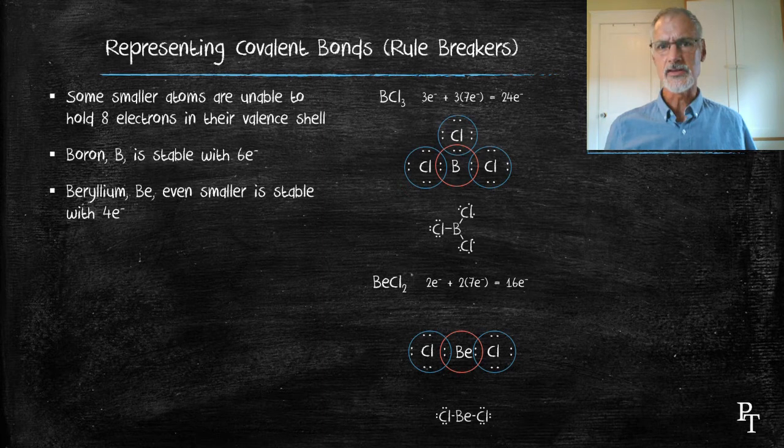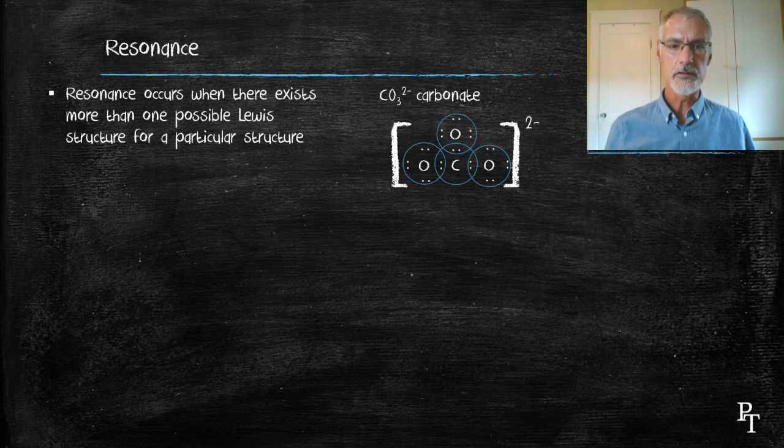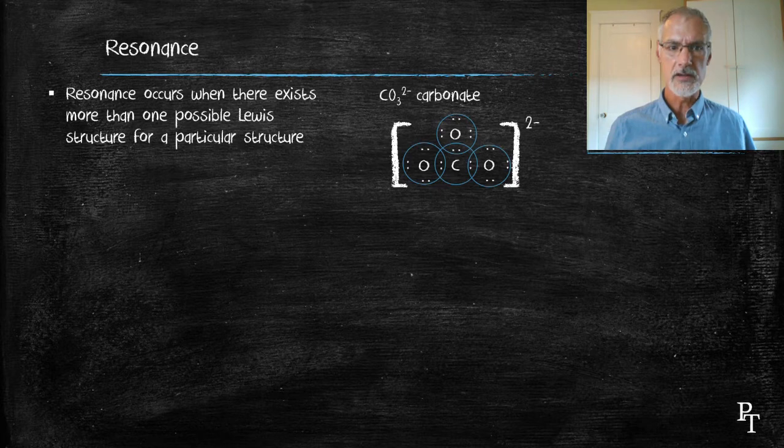Covalent bonding also leads to a condition called resonance. Resonance occurs when there's more than one possible Lewis structure for a molecule. I'm going to return back to carbonate. Here I have the structure of carbonate that we studied earlier. At this point, it's incomplete because the carbon in the middle is unstable. We remedied that situation by moving in a pair of electrons to create this structure.